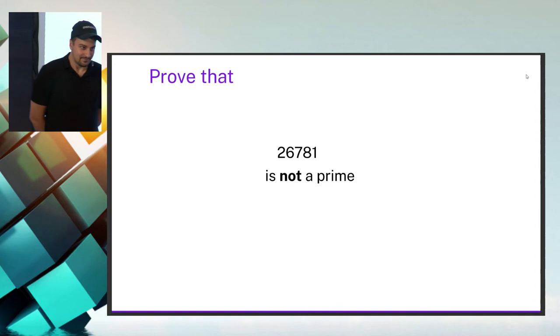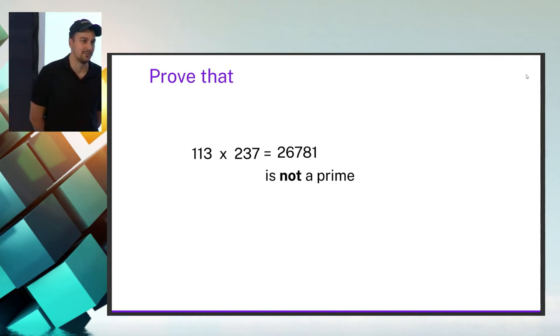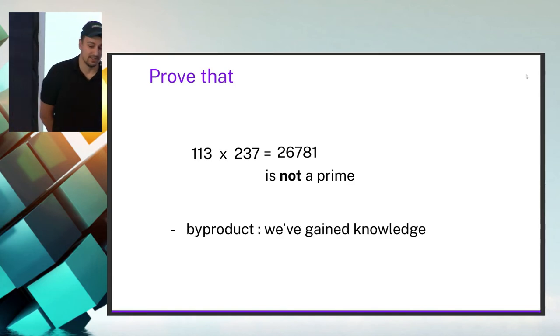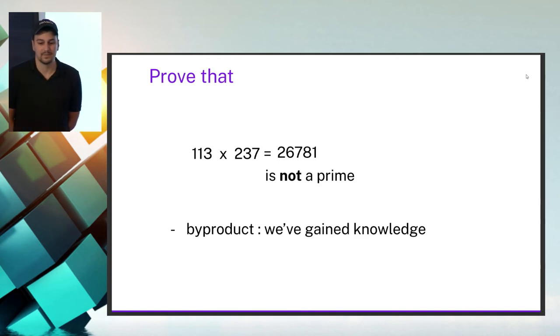Let's see how ZK works. We want to prove that the number 26,781 is not a prime. One option is to prove that it originated from the multiplication of two specific numbers — this is how prime numbers work. But as a byproduct, we have gained knowledge: we now know which numbers it was constructed from.